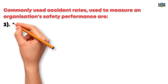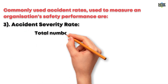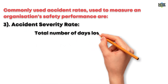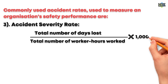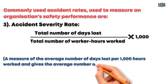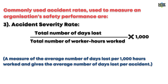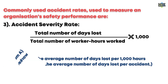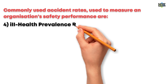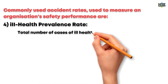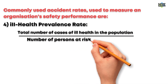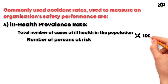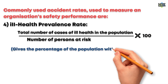Three, accident severity rate — total number of days lost divided by the total number of worker hours worked, multiplied by one thousand — a measure of the average number of days lost per one thousand hours worked, giving the average number of days lost per accident. Four, ill health prevalence rate — total number of cases of ill health in the population divided by the number of persons at risk, multiplied by one hundred — gives the percentage of the population with the disease.